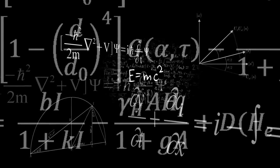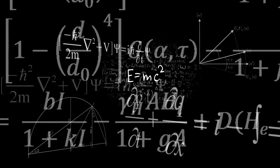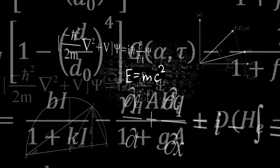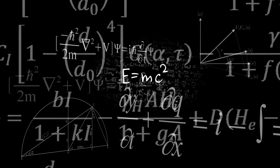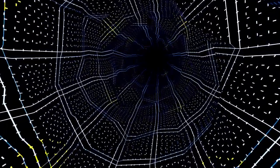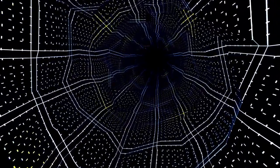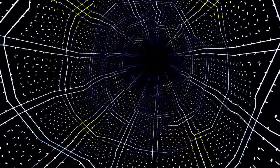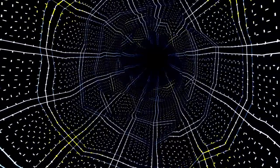To understand how that might be possible, we need to take a look at the theory of relativity, which is one of the pillars of modern physics. Einstein's theory of relativity showed that time and space are not separate entities, but instead are interwoven into a single four-dimensional entity called spacetime. This theory opened up the possibility of manipulating spacetime and therefore time travel.